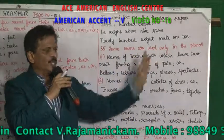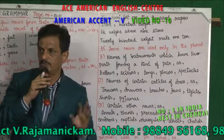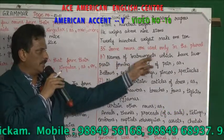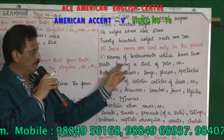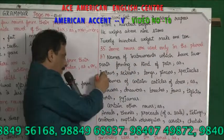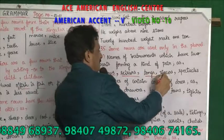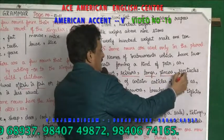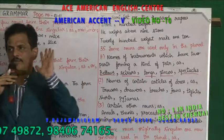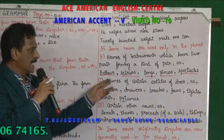Some nouns are used only in the plural. Names of instruments which have two parts forming a kind of pair: bellows, scissors, tongues, pincers, spectacles. They are used only as plural — there is no singular form for them.